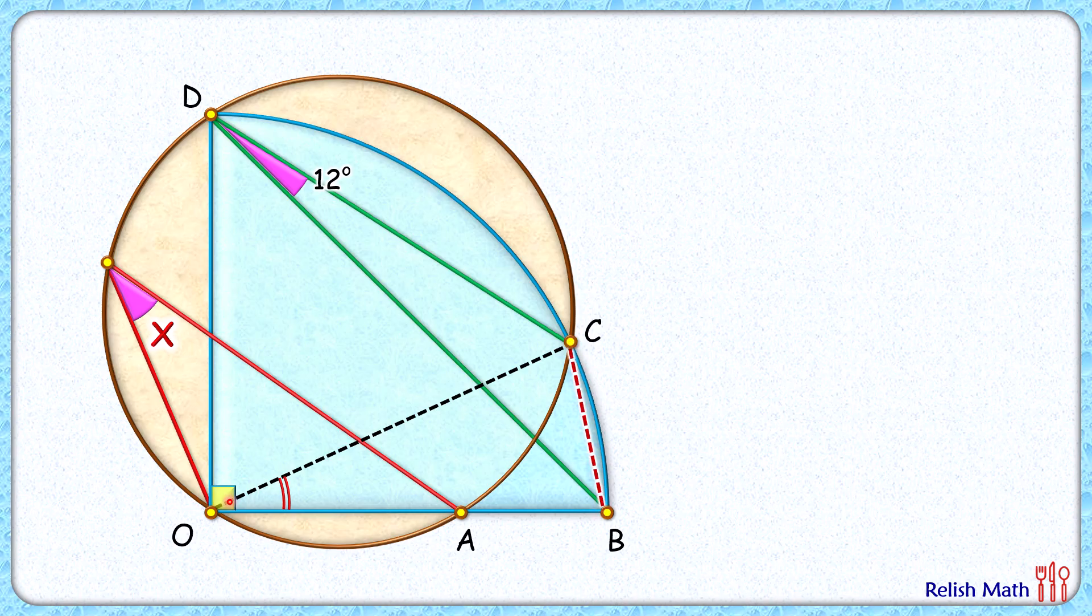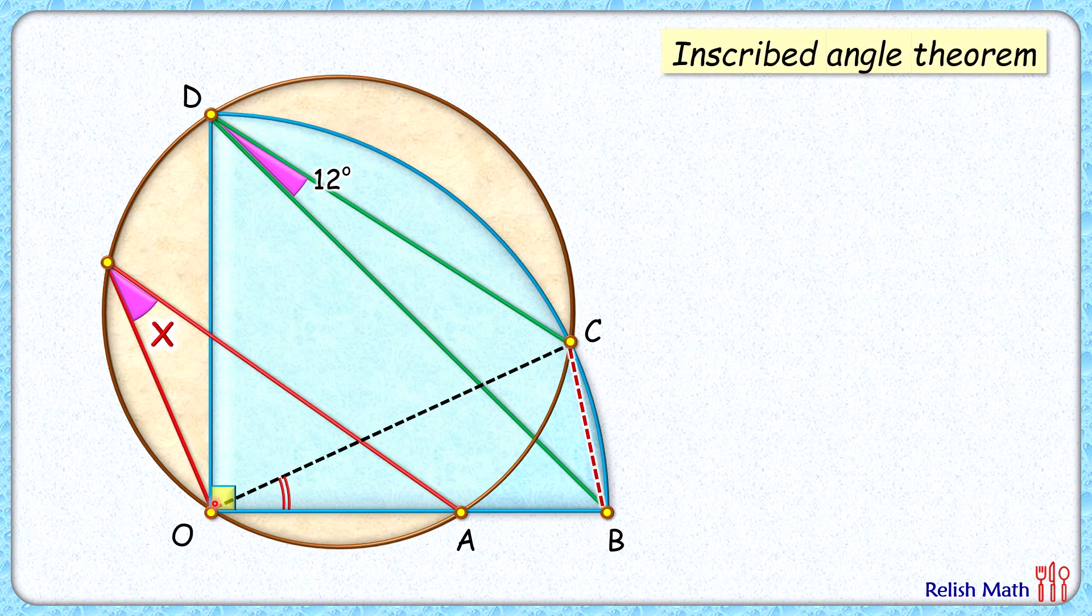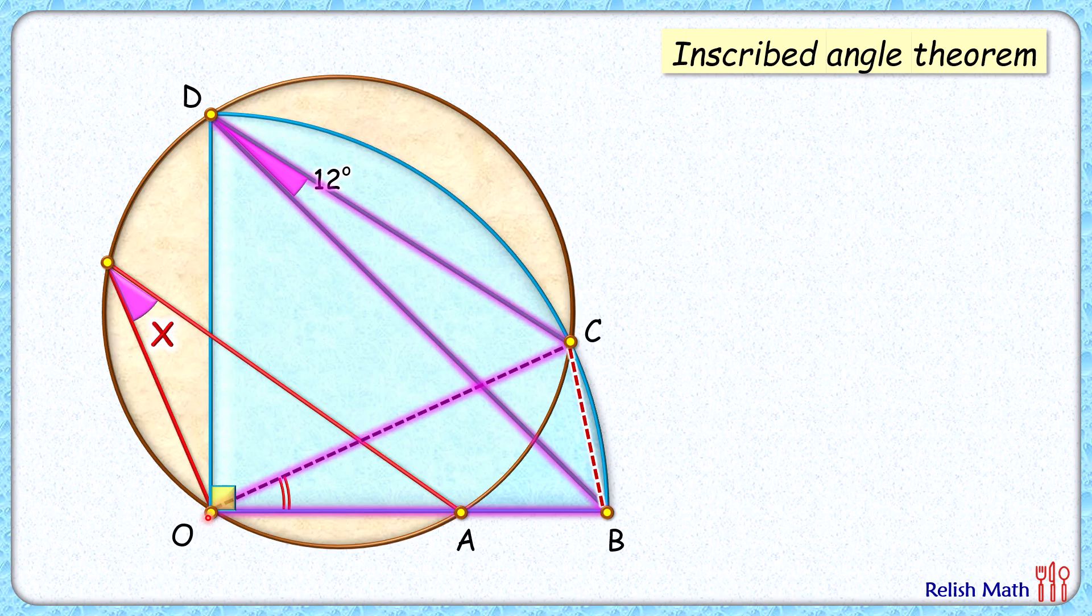And with respect to this blue quadrant, we'll apply here inscribed angle theorem. That is, for a chord, the angle at the circumference will be half the angle inscribed at the center. So this angle here, this red angle, will be twice of 12 degrees, or 24 degrees.